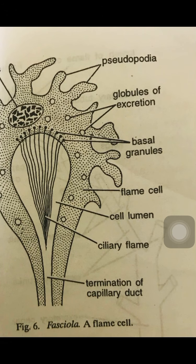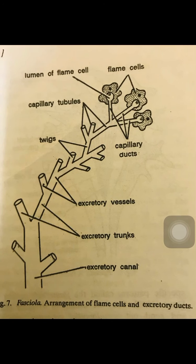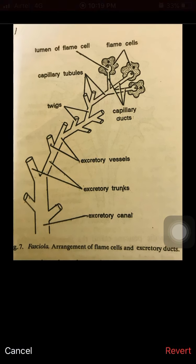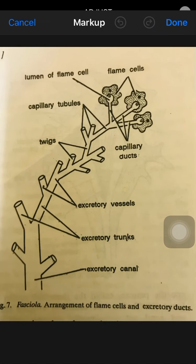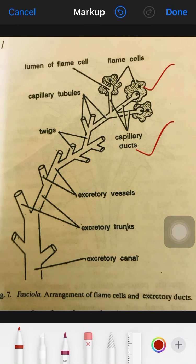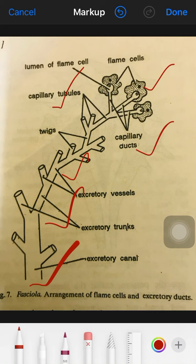The flame cell has a cytoplasmic process, a large number of excretory granules, basal granules, and a large nucleus. From each flame cell, a lumen — that is, capillary ducts — arises, and these capillary ducts unite to form a structure called capillary tubules, which are called the trunk, opening into the main trunk.